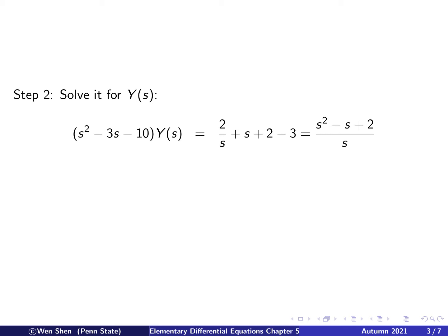Notice that the polynomial s squared minus 3s minus 10 in front of Y(s) looks familiar — it is exactly the characteristic equation, where we had r: r squared minus 3r minus 10 = 0. So there is a lot of connection here. Now we can write out what Y(s) is: the numerator divided by that polynomial, which factors easily as (s minus 5)(s plus 2).